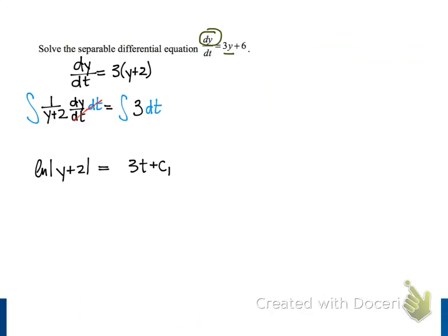To solve this for y, we know we need to eliminate the natural log on the left side of the equation, so we're going to exponentiate both sides. On the left side, we raise e to the power of the natural log of y plus 2, and on the right side, we raise e to the power of 3t plus c1. e to the x and natural log of x are inverse functions, so the left side simplifies to just y plus 2.